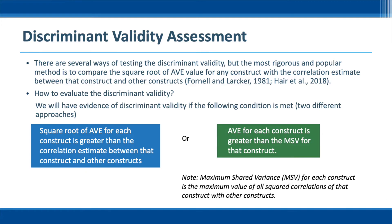Alternatively, we can use the MSV method to evaluate discriminant validity. MSV stands for maximum shared variance. MSV for each construct is the maximum value of all squared correlations of that construct with other constructs. If the AVE for each construct is greater than the MSV for that construct, then we can say that we have evidence for discriminant validity. We need to make sure that we have both convergent and discriminant validity before testing the model.